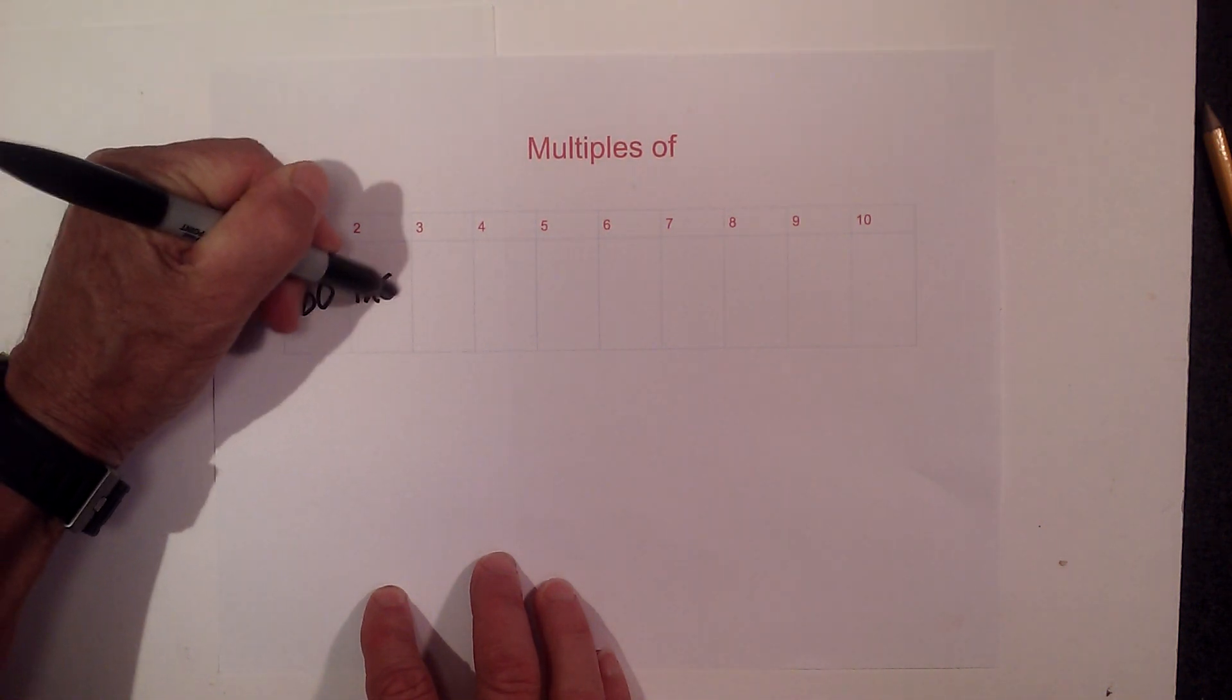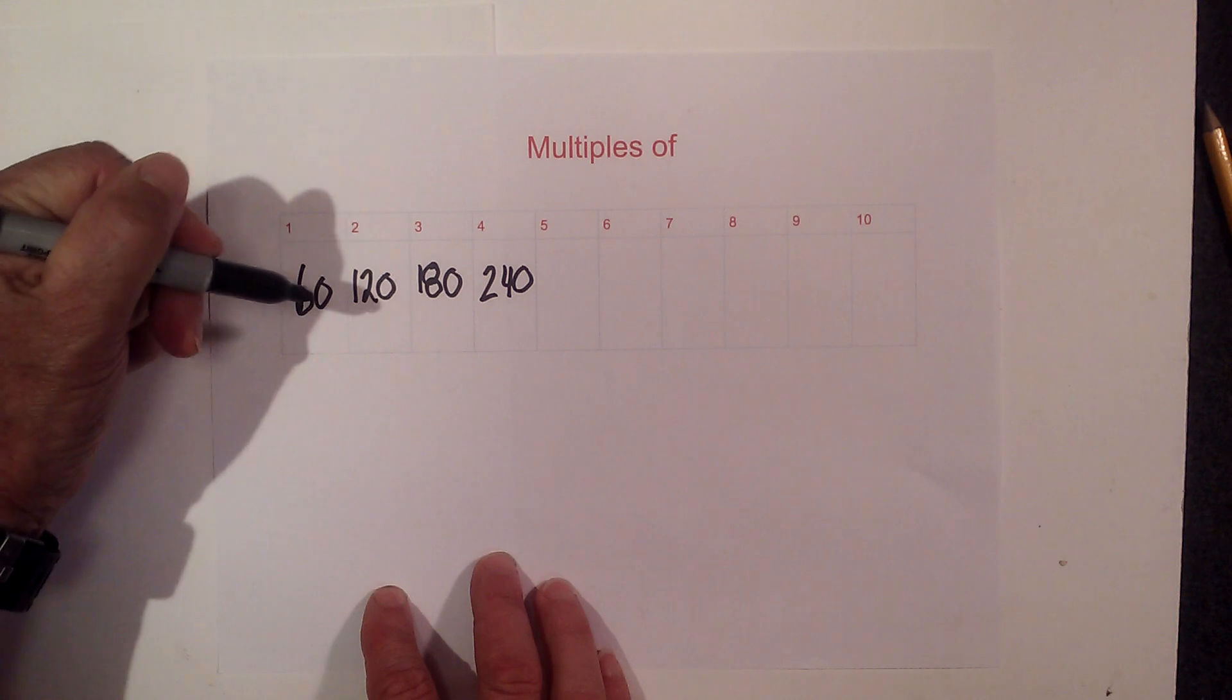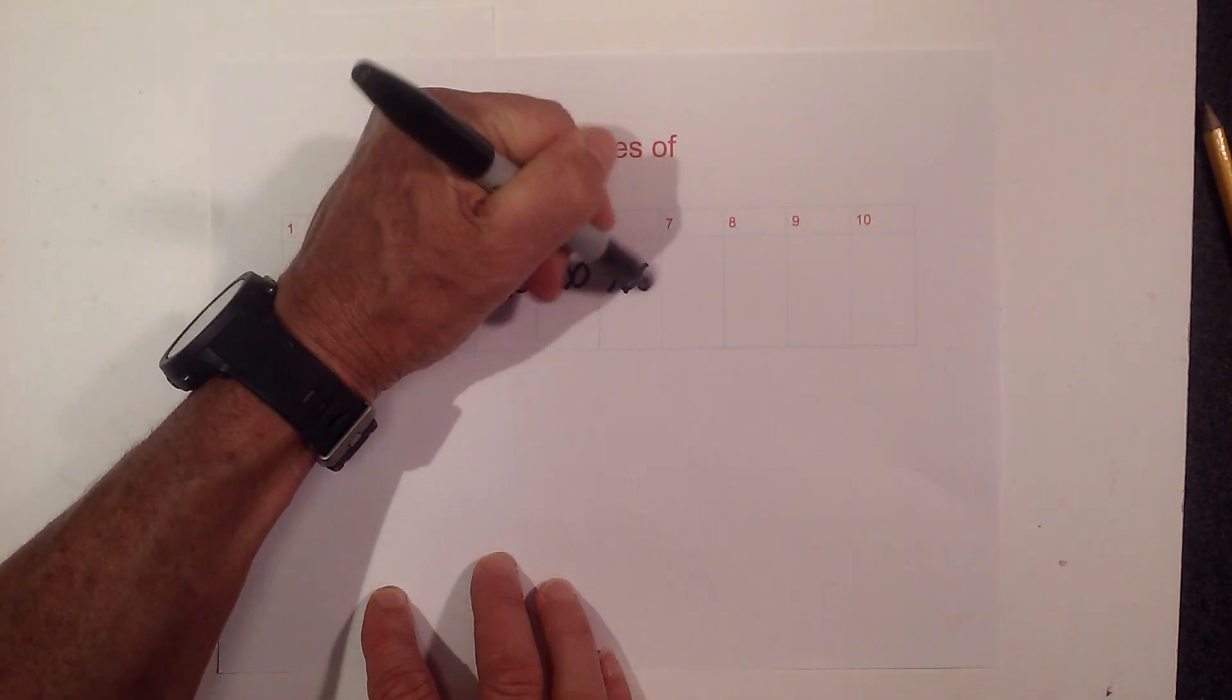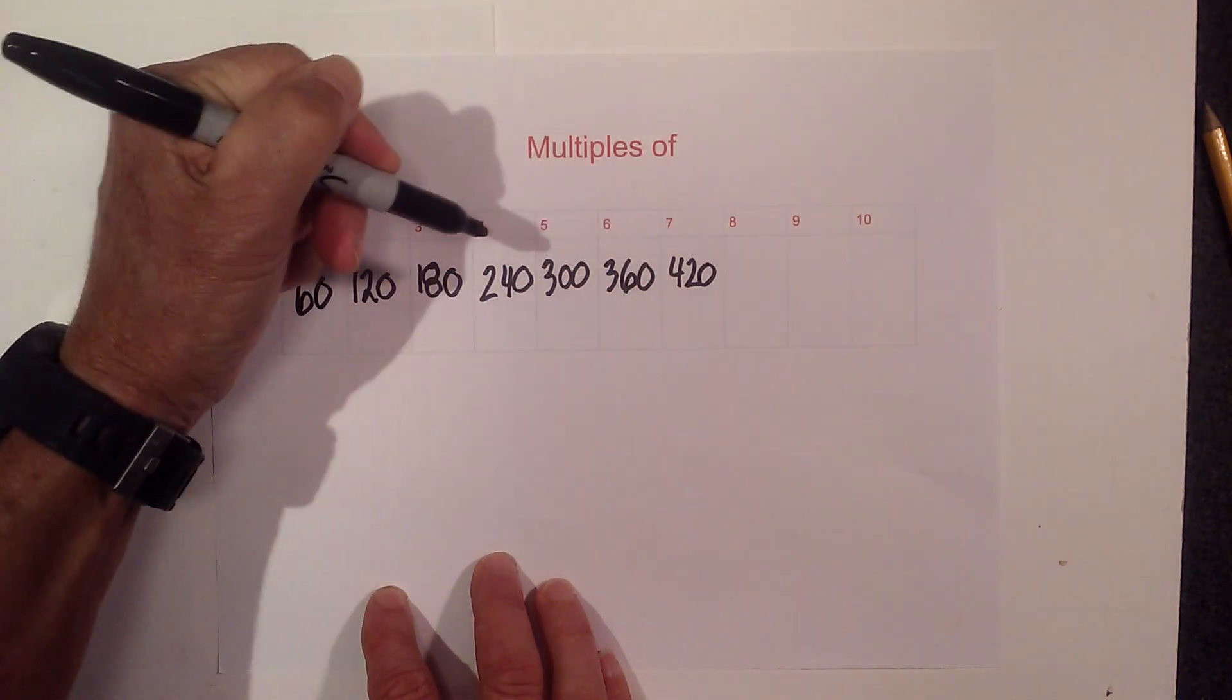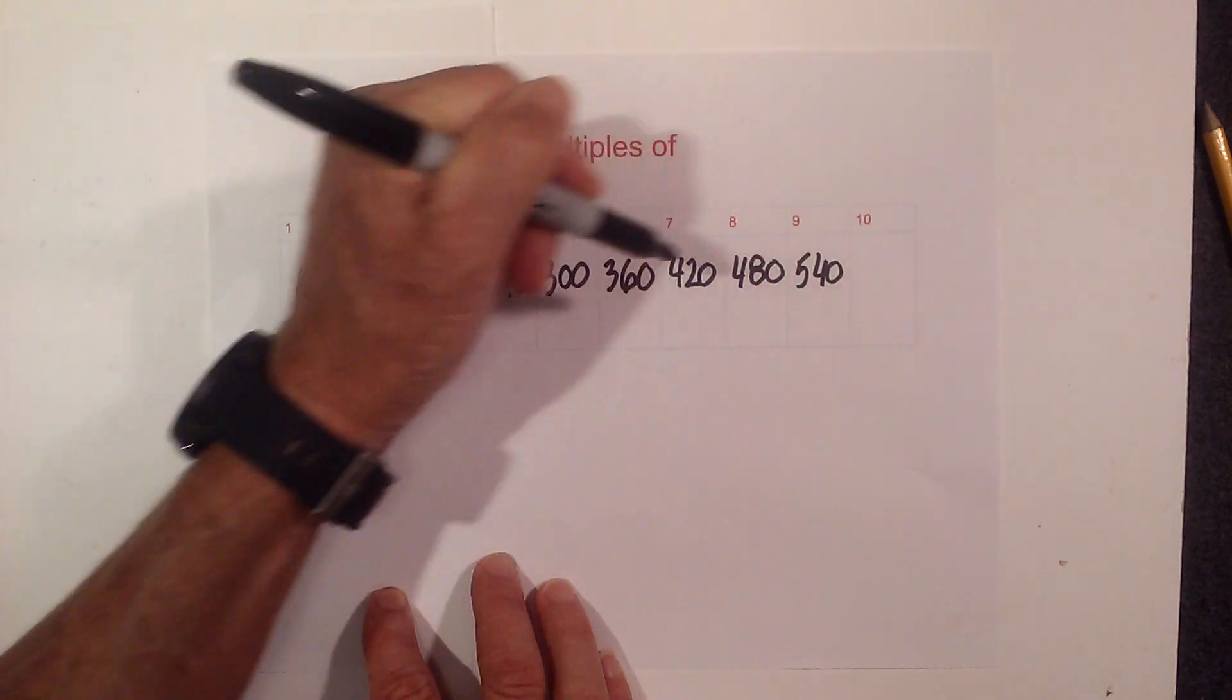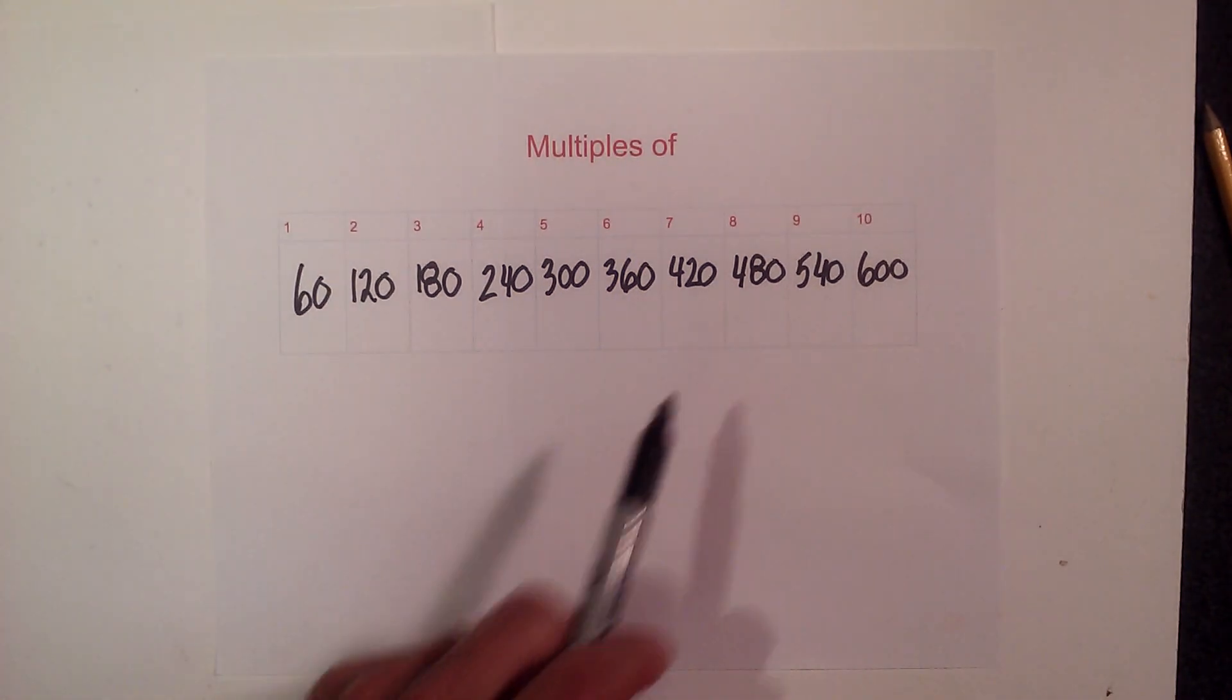2 times is 120, 3 times 60 is 180, next we have 240, then we have 300, then 360, then 420, 480, 540, and the last is 600. So there are the multiples of 60 to 10.